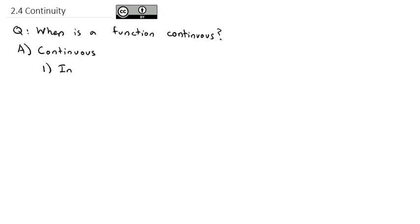First, kind of an informal definition. The idea of continuous means basically I can draw the graph without lifting my pencil. It's just a continuous curve without lifting the pencil for a gap or a jump or an asymptote.